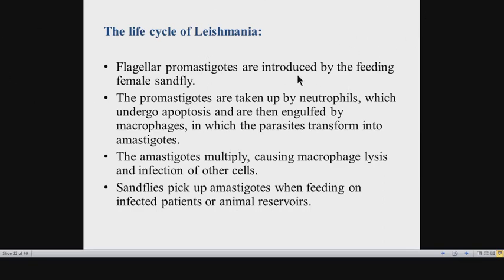Leishmaniasis is transmitted by the sandfly vector. When the sandfly bites a human, it introduces a stage called promastigotes — the initial form of the Leishmania parasite entering the human body. Inside the body, these promastigotes are immediately taken up by neutrophils, which then undergo apoptosis and release the promastigotes, which are subsequently engulfed by macrophages via phagocytosis.